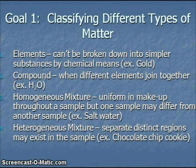We also have compounds. These are pure substances when we have different elements joined together. For example, water is H2O, glucose is C6H12O6. For mixtures, we classify those as either being homogeneous or heterogeneous. This is discussing the uniform makeup throughout the sample when we have a homogeneous sample, for example, salt water. A heterogeneous mixture is one in which there are separate distinct regions that can exist. A chocolate chip cookie would be an example of this.